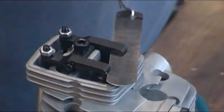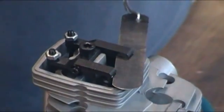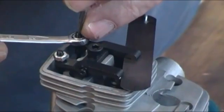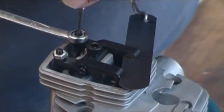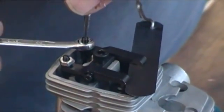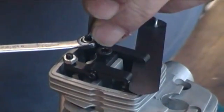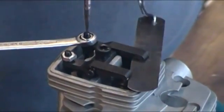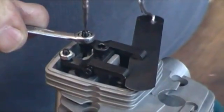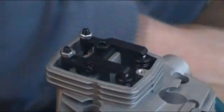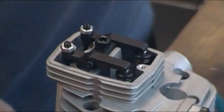We take the screwdriver and adjust the tappet adjusting screw to the right position. And using the ring spanner and the screwdriver in tandem we just lock it back to lock the nut against the screw so that it is unable to adjust by itself.